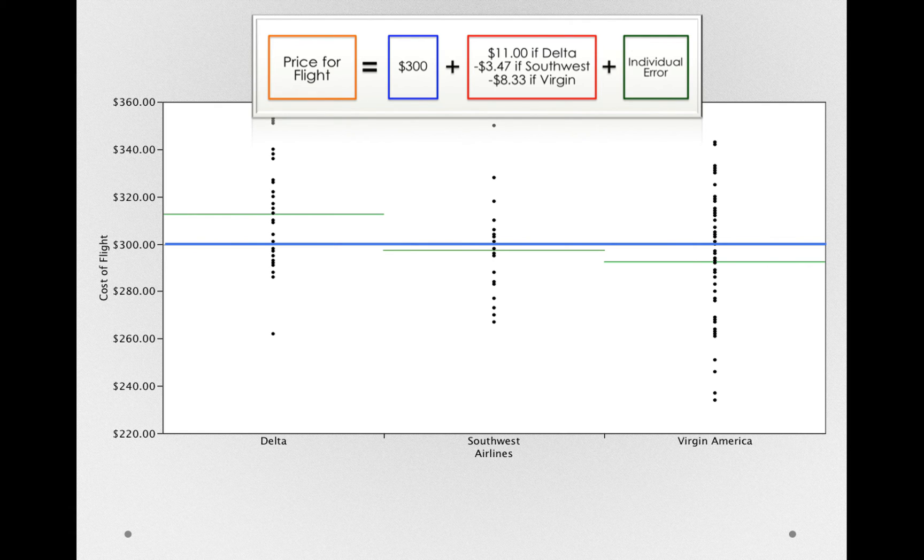But notice again that within each group, there is still individual error. That individual error is capturing all the other things we didn't measure. And for this model, we're not using minutes of duration, and we already saw that that did relate to cost of flight. So this individual error in each of these different groups is still there. Our mathematical models are describing a statistical relationship. It's showing what the average is for these different groups, which may for us be a very useful thing.